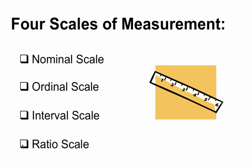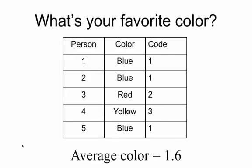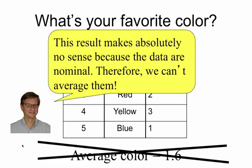The nominal scale gives you an idea of what it means because nominal means name — you're giving a number as a name for something in the data. For example, I could give somebody a survey asking their favorite color, and code it as blue equals 1, red equals 2, yellow equals 3, green equals 4, and purple equals 5. The numbers don't mean that green is twice as much as red; four is just a name. Some people might do the exact wrong thing by averaging them and saying the average favorite color was 1.6 — that makes absolutely no sense because the data are nominal, so we can't average them.